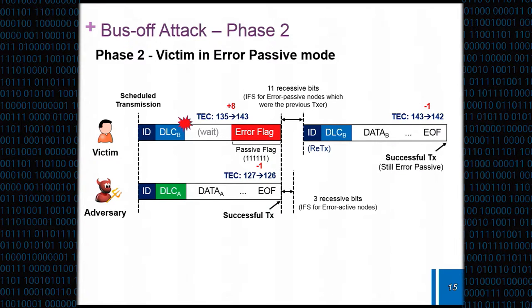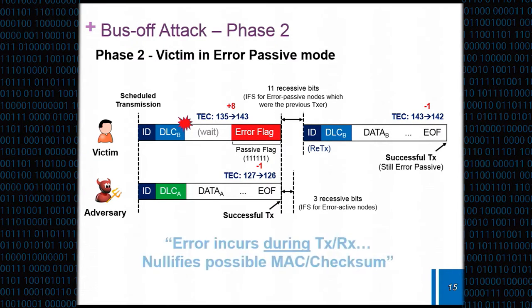Another interesting thing that I would like to capture here is that people are trying to install message authentication codes or use checksums for some reliability or security. But all of this error occurrence is done during transmission or reception, which means even before some node tries to verify their MAC or tries to verify their checksum, the errors are incurred and the attacker can succeed in this attack no matter what.